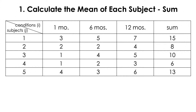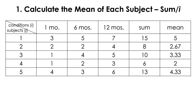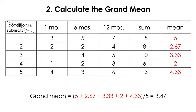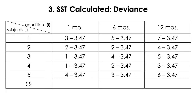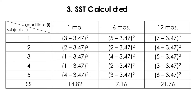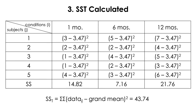To calculate subject means, you first calculate the sum of each row and divide by three. So that gives you five, and so on. The grand mean is just the mean of these row means — add them all up and divide by five — and you get 3.47, which is the same grand mean as before. The total sum of squares is calculated by finding the deviance between each datum and the grand mean, squaring it, and summing all values, giving SST = 43.74.